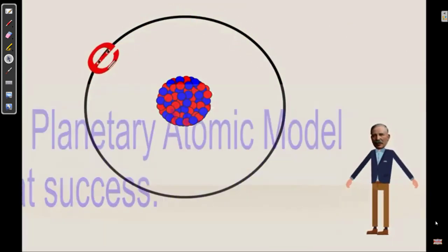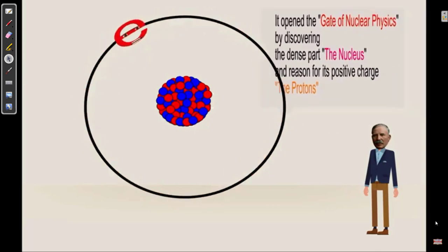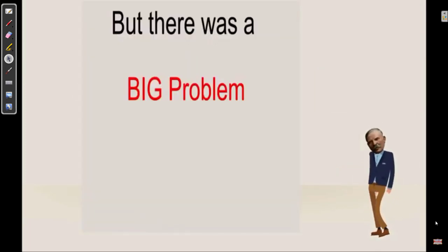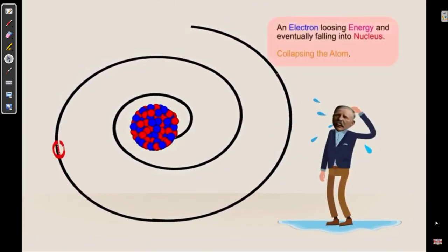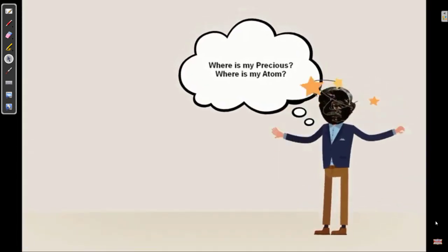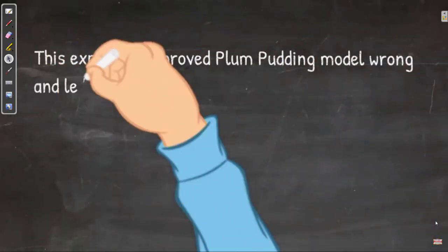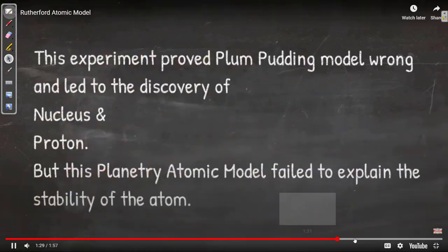That caused Rutherford to create the planetary model of the atom. There's a nucleus in the middle, like the sun, and the electrons orbit the nucleus like the planets orbit the sun. But because these particles are charged, and charged particles moving relative to each other lose energy, this model under classical physics would predict that the electron would lose energy as it rotated around the nucleus and then crash into it.